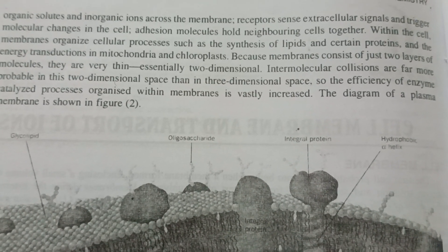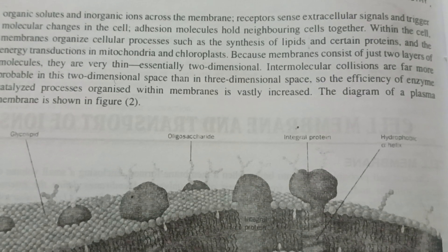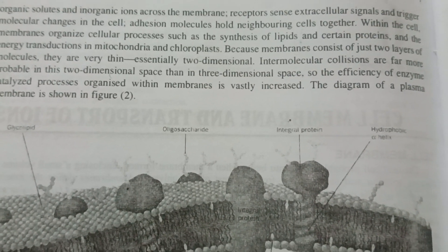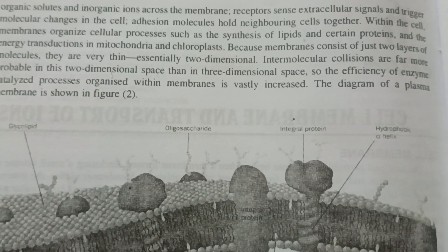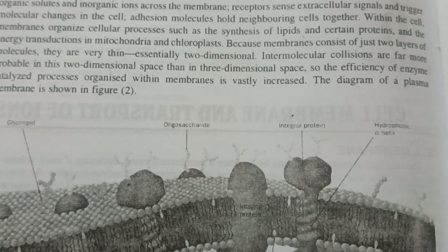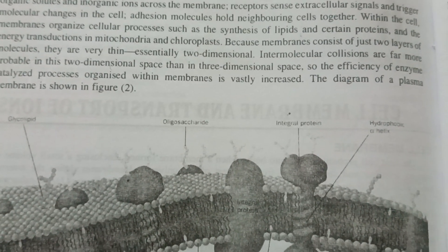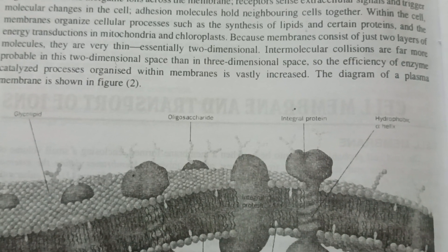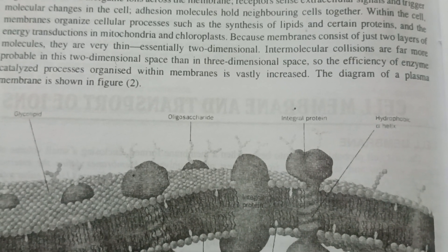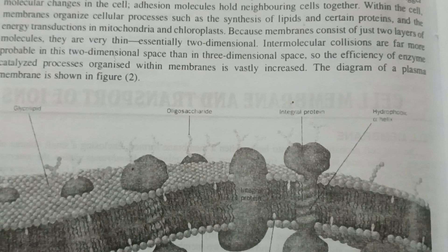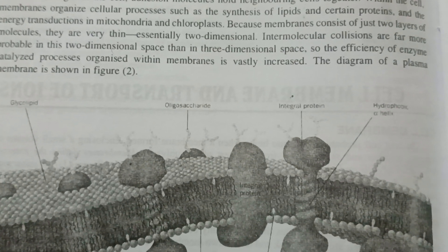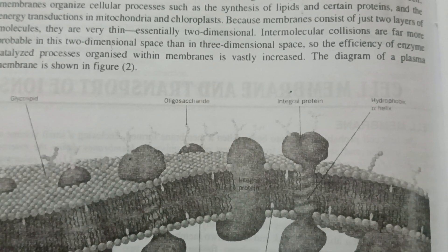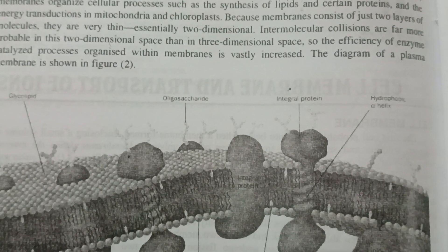Adhesion molecules hold neighboring cells together. Within the cell, membranes organize cellular processes such as synthesis of lipids, certain proteins, and energy transduction in mitochondria and chloroplasts. Because membranes consist of two layers permeable in two-dimensional space rather than three-dimensional space, the efficiency of enzyme-catalyzed processes organized within the cell membrane is vastly increased.